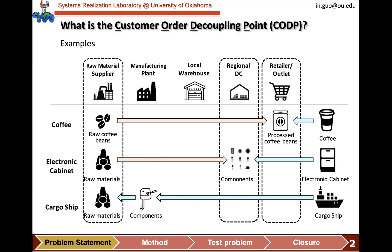There are several examples of the CODP for different goods. For coffee, the CODP is at the retailer's coffee house as the stock, in the form of processed coffee beans. When a customer orders a certain type of coffee, the coffee maker starts making it. As to an electronic cabinet, the CODP is advanced to the components at the regional distribution center, because there can be various configurations — only when a customer places an order of a specific configuration can a good start to be prepared. But the standard components can be prepared in advance in inventory, before the ordering.